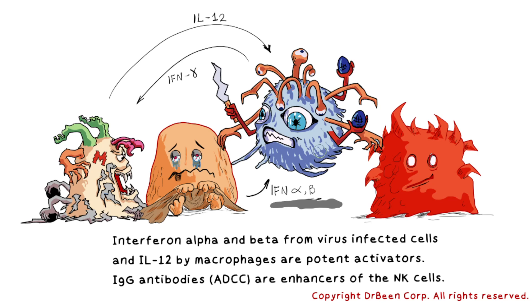Finally, NK cells release interferon gamma that activates macrophages. This is how the innate arm helps the innate arm. Thank you very much. Talk to you later.